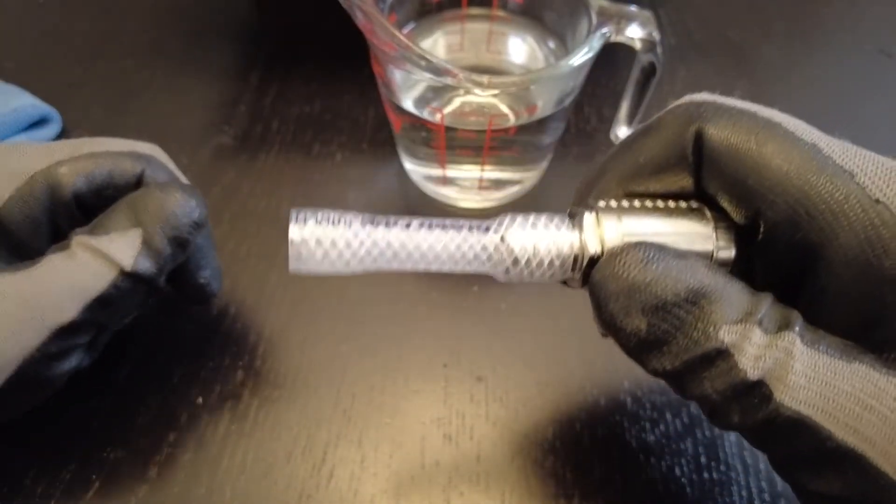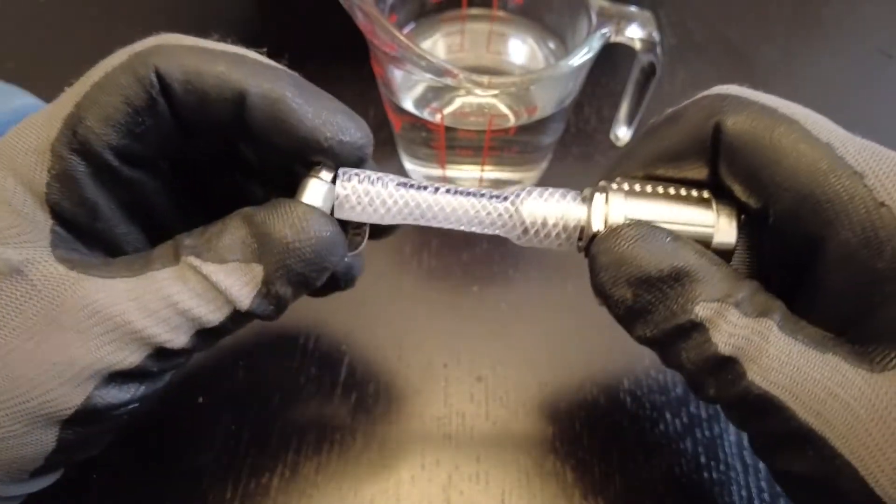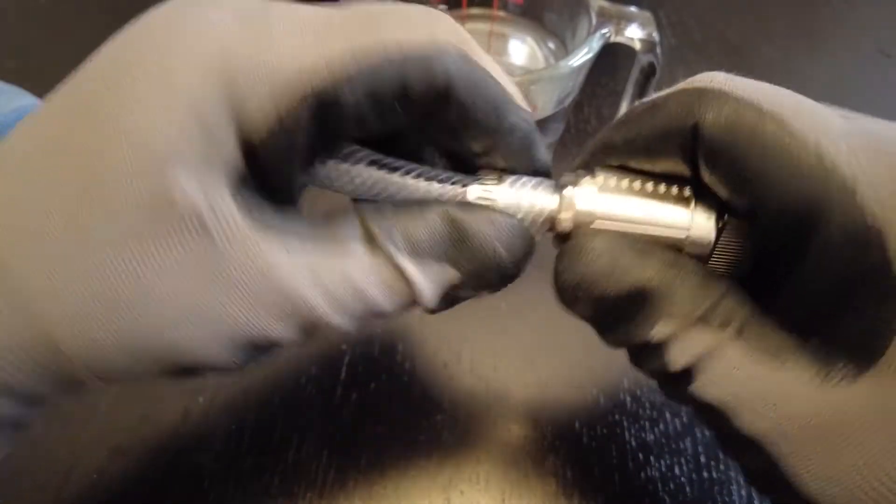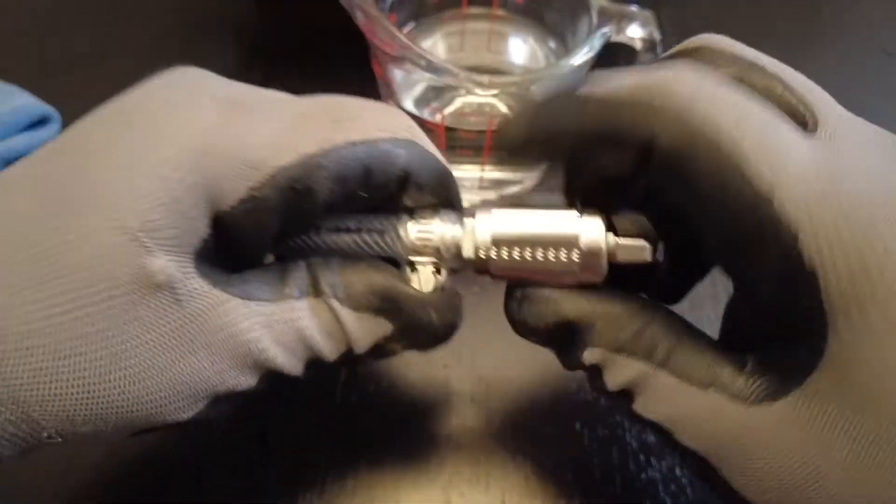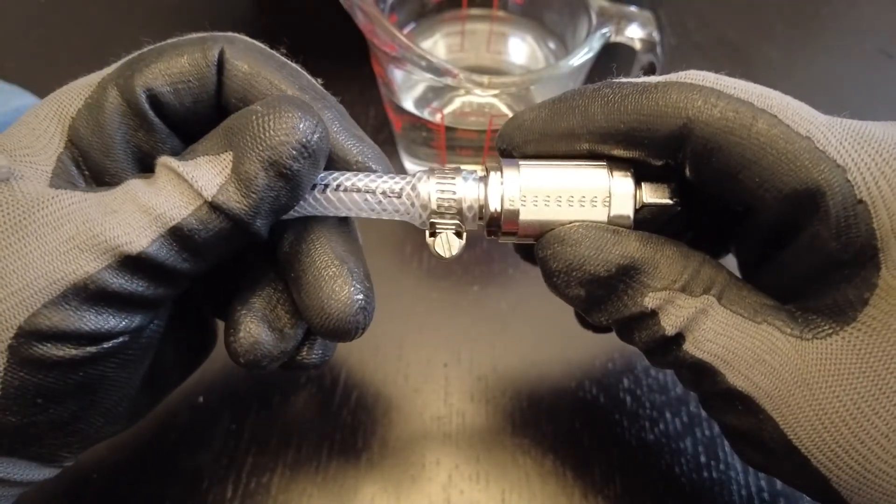So once it's on you take yourself a hose clamp and put it on the hose. Move it towards the end where you want to crimp it and just connect it like that.